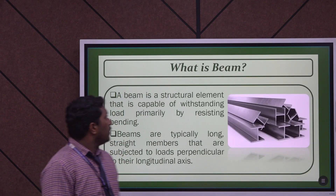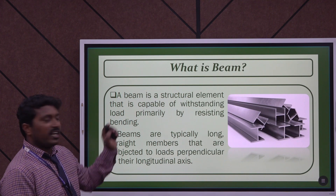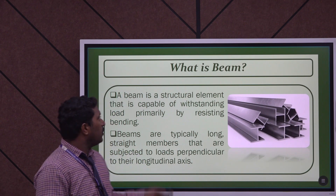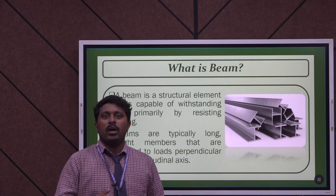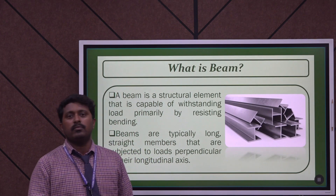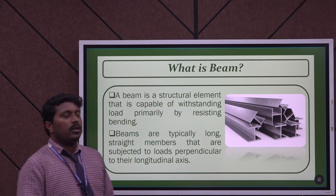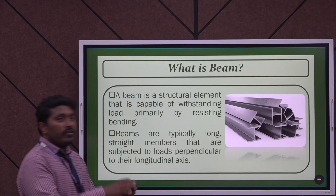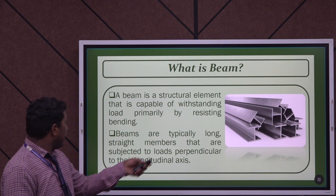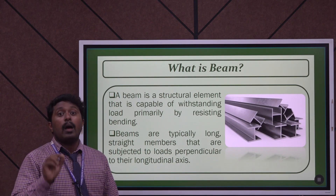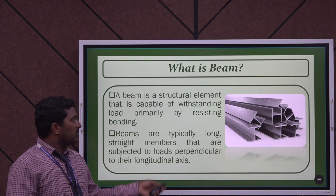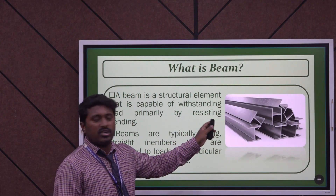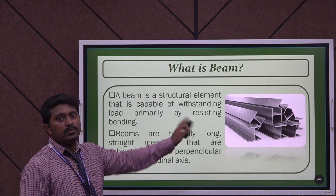Starting with what is a beam. A beam is a horizontal structural element that is capable of withstanding load, primarily resisting bending. Normally beams are used in civil structures like buildings, dams, and bridges. Apart from that, beams are used in machines as well. Beams are typically very long, straight members that are subjected to loads acting perpendicularly on the longitudinal axis. The image shown here is a steel beam with an I or H cross-sectional area.